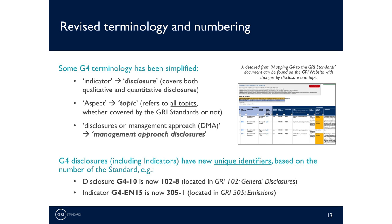It's worth highlighting that some terminology and numbering has changed compared to G4. We no longer use the term 'indicator' — instead, the standards use 'disclosure' to refer to all information which is to be disclosed or reported, whether quantitative or qualitative. We also no longer differentiate between an 'aspect' and other topics as we did in G4. Instead, the standards use the word 'topic' throughout to refer to any economic, environmental, or social topic, whether covered by the GRI standards or not. Third, we're not using the GRI-specific acronym DMA — this is just referred to as the Management Approach or Management Approach Disclosures.